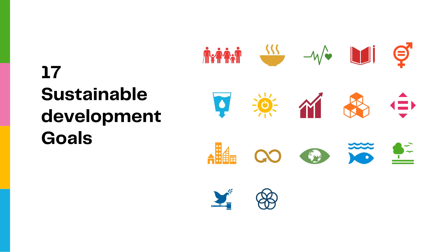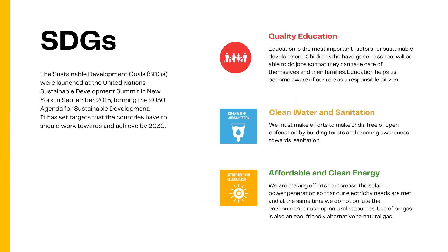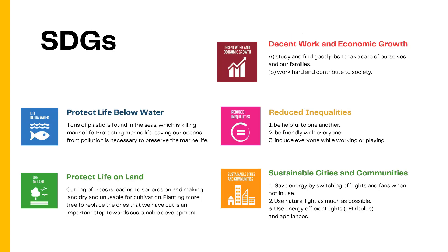Sustainable development goals were launched at the United Nations Sustainable Development Summit in New York in September 2015, forming the 2030 Agenda for Sustainable Development. It has set targets that countries should work towards and achieve by 2030. The 17 Sustainable Development Goals have been made with the aim to take care of the important issues facing businesses, governments, and society. Some of these issues are poverty, gender equality, water use, energy, climate change, and biodiversity.